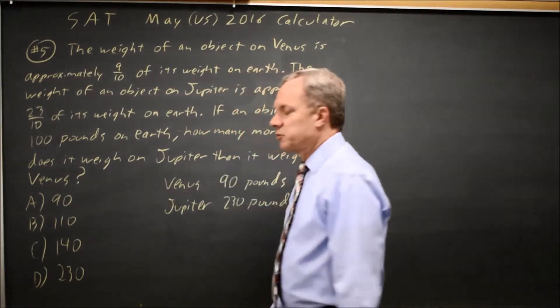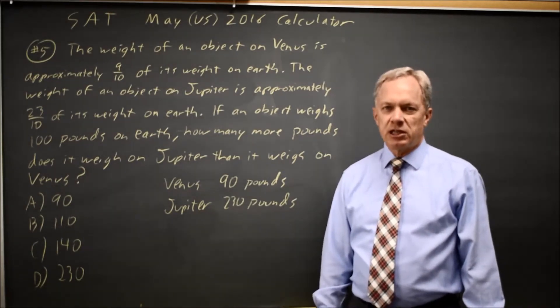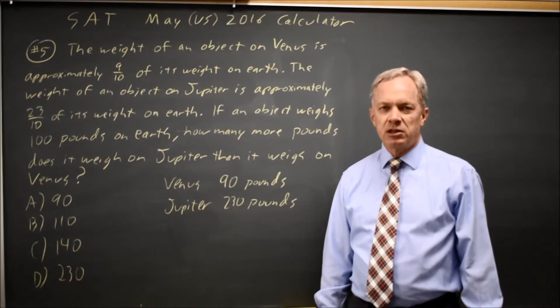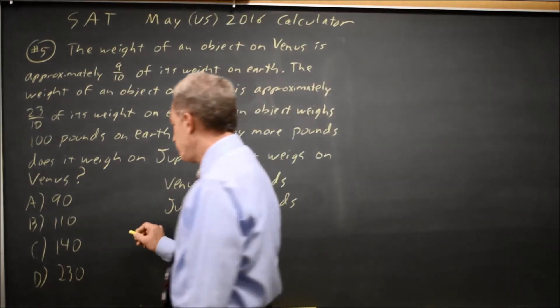And the question is, how much more is its weight on Jupiter than on Venus? If you take Jupiter's 230 minus Venus's 90, you get 140 pounds, which is choice C.